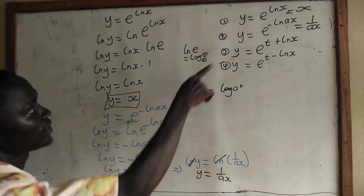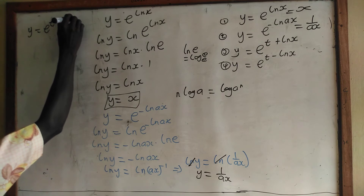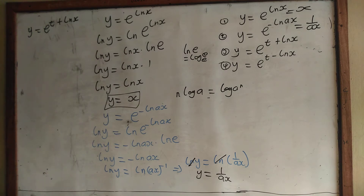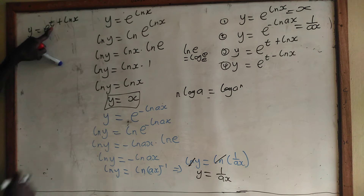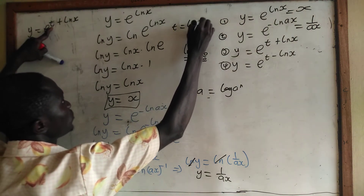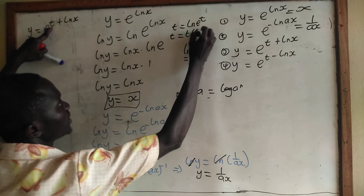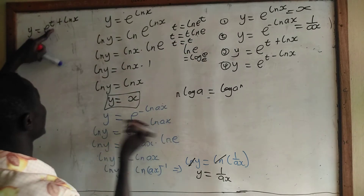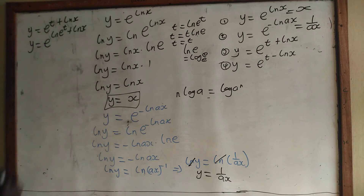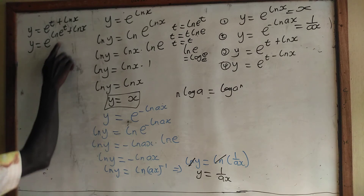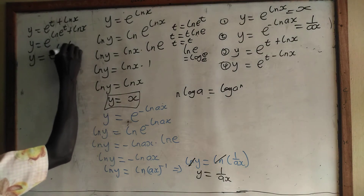Now let us continue with the third one. We have y equal to e to the power t plus ln x. We know that ln e is 1, so we can express t as ln of e to the power t, because from the logarithm law, t comes down giving t times ln e, which equals t since ln e is 1. So I write y equal to e to the power ln e to the power t plus ln x. From the first law of logarithm, if we are adding logs we multiply the numbers, so we have y equal to e to the power ln of t times x.